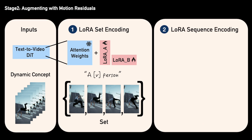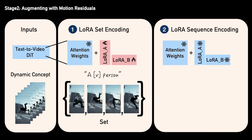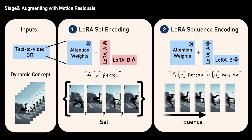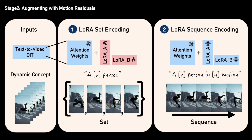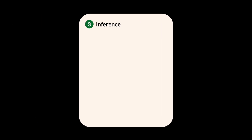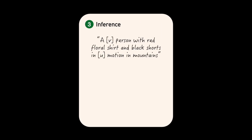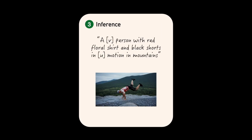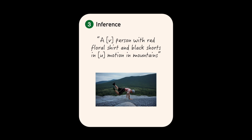In stage two, we augment this basis with motion residuals derived from the sequence to encode dynamics. Finally, we perform inference, incorporating text-driven edits into the personalized concept while maintaining the original identity and motion fidelity.